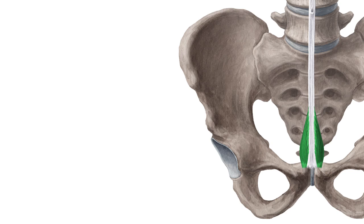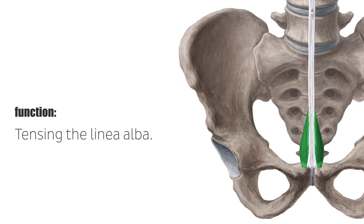The pyramidalis is a rudimentary muscle and relates to the pouch inside of monotremes, such as the hedgehog and platypus, and marsupials such as the koala or kangaroo. Its original function, tensing the linea alba, does not play a role in higher mammals anymore.